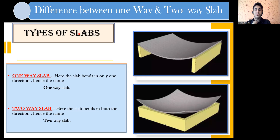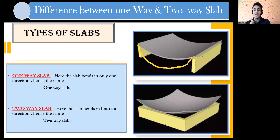Look at this particular position — this is a one-way slab. The bending is in only one direction. The slab is trying to bend in this direction. You might ask, is it not bending here? No, it is supported — you can see brickwork has been done here, so there is no bending on that side. So bending is only in one direction — it's a one-way slab. Over here, the bending happens in both directions — like a saucer arrangement. The bending is in this direction and also in this direction. This is a two-way slab.